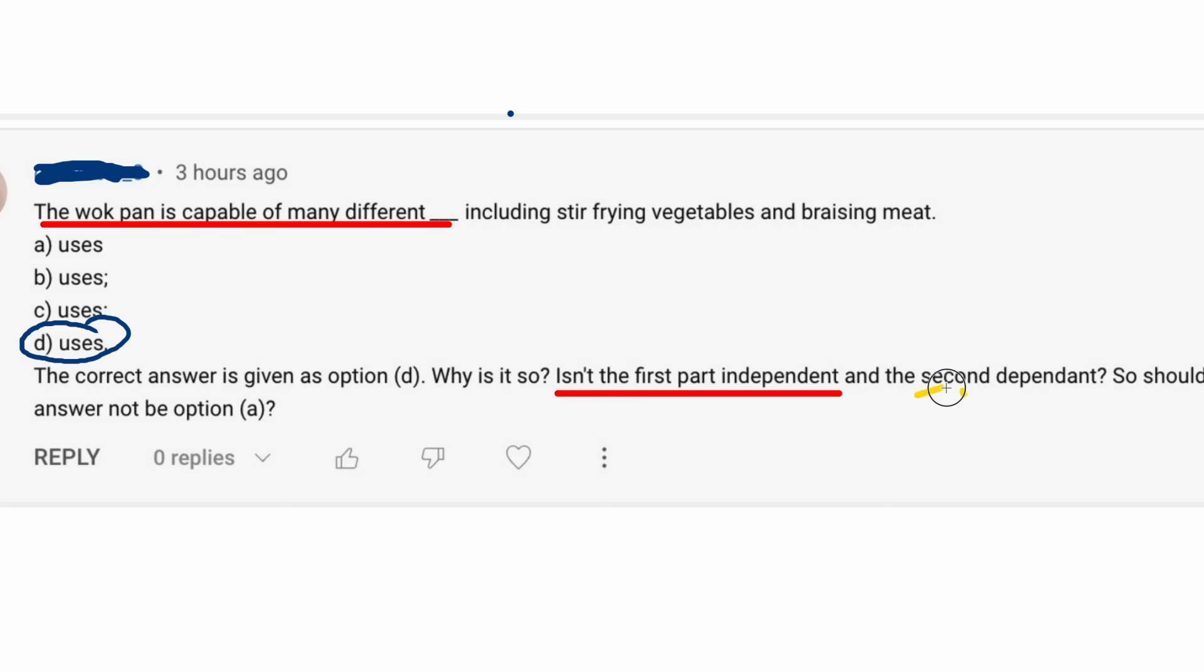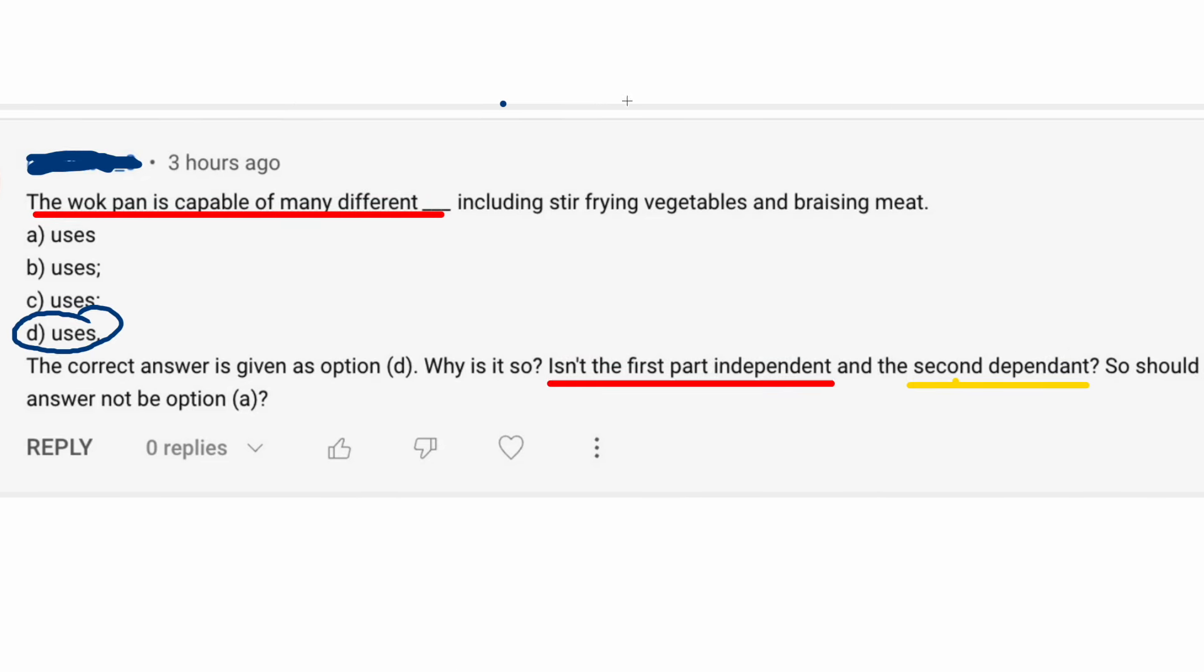But the wok pan is capable of many different uses. But the second part is not a dependent clause. That's something that I myself have been a little sloppy about in the past, but I've been making sure to be more precise about in more recent videos. And that is the distinction between a dependent clause and a phrase. This would be a phrase. It doesn't really matter what kind of phrase, but I would say it's a participle phrase because it starts with a participle including.